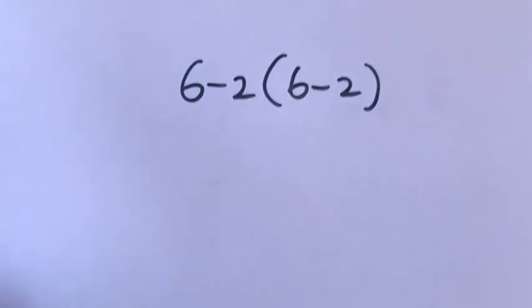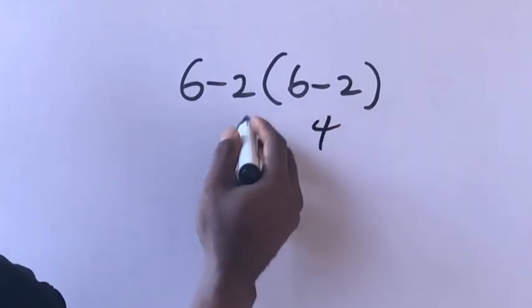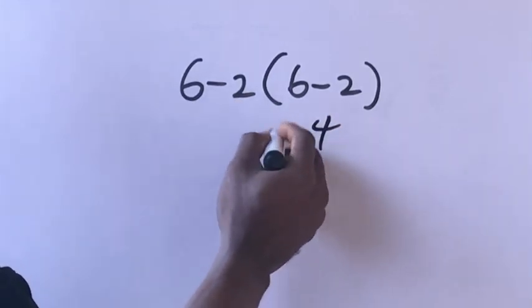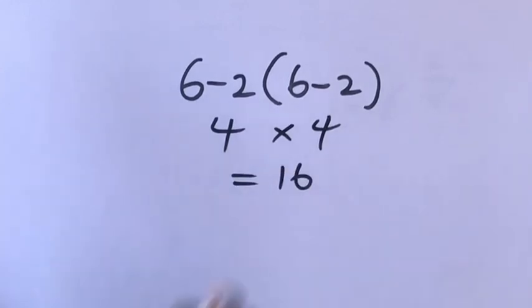Six minus two times six minus two. Here six minus two will give us four. Four times four equals what? Sixteen.